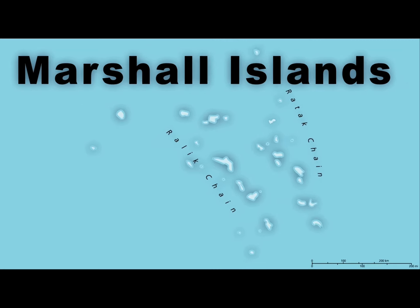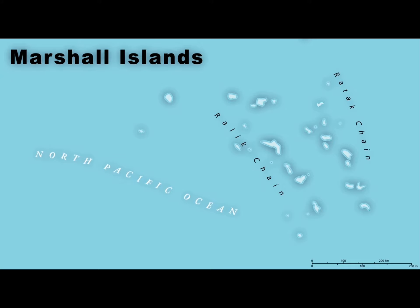The Marshall Islands have a capital named Majuro. The Marshall Islands are divided into two island chains, the Relic Chain and the Radek Chain, in the Central Pacific Ocean — with the capital Majuro, let's get into this commotion.